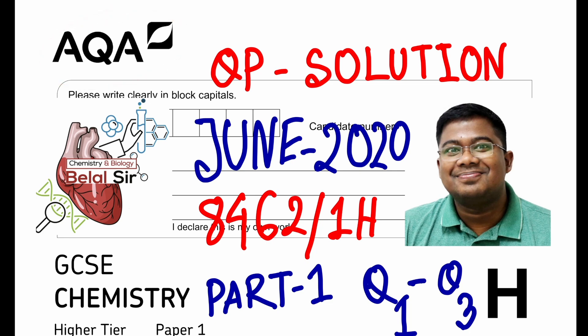Hi everyone, today we're going to be solving AQA GCSE chemistry higher tier paper 1 question paper. We're going to be solving June 2020 part 1 from question number 1 to question number 3.